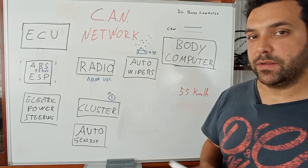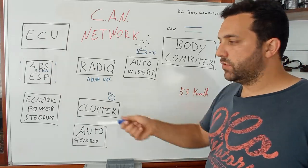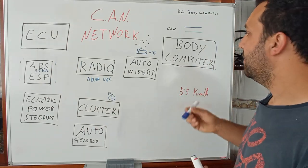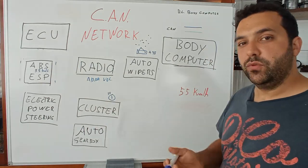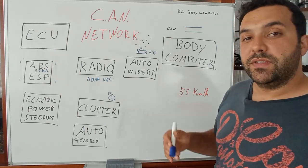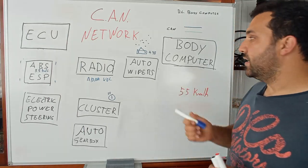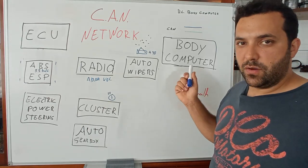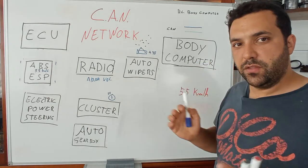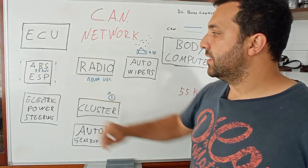You also have the body computer. For the 156 you don't have most of those functions, but the body computer needs the speed info — for example, so the boot does not open while driving, for the alarm system, and for a lot of other reasons. The body computer is the main computer of the car — the shell of the car.